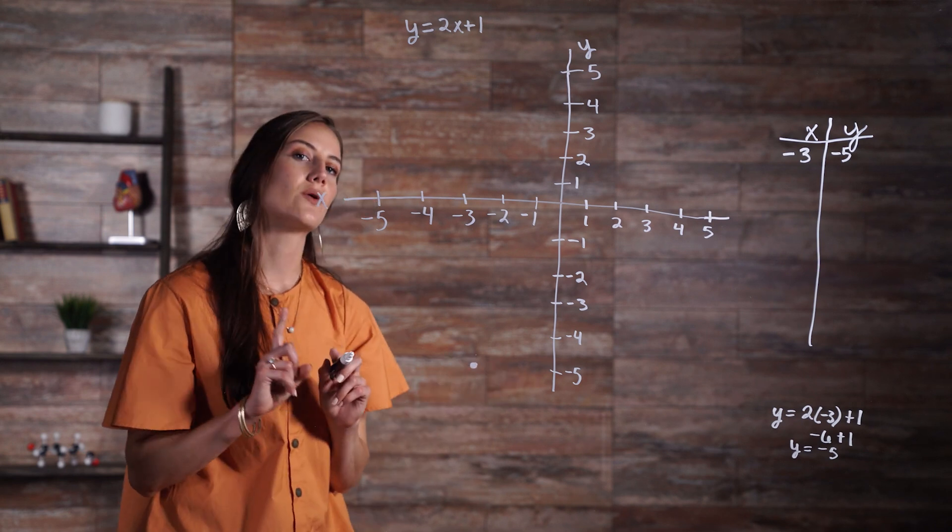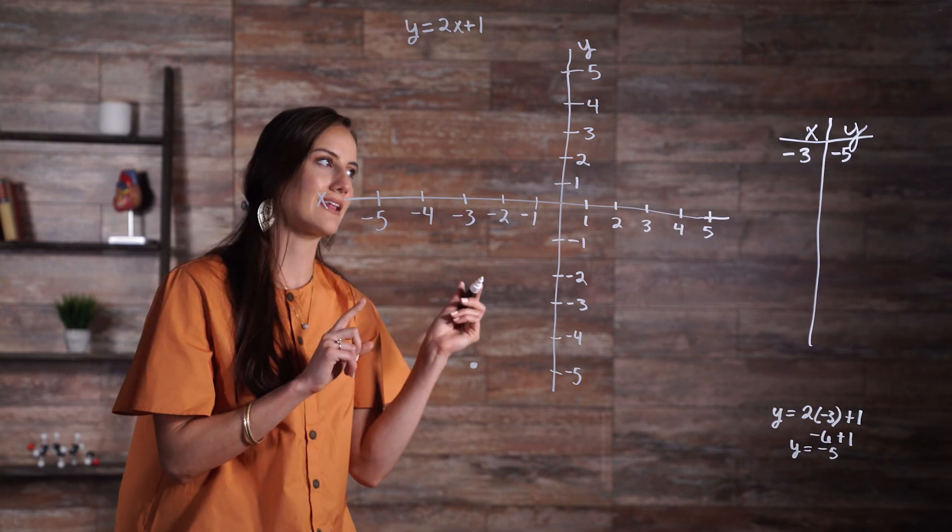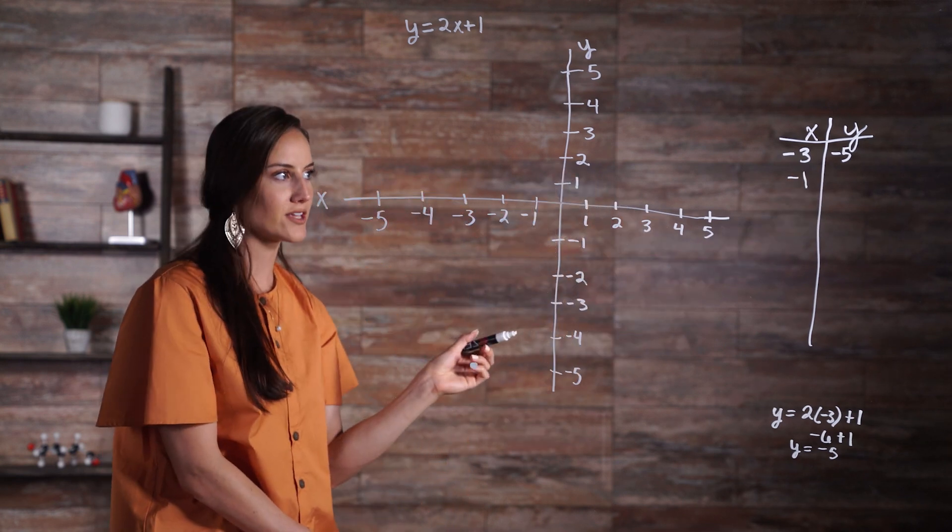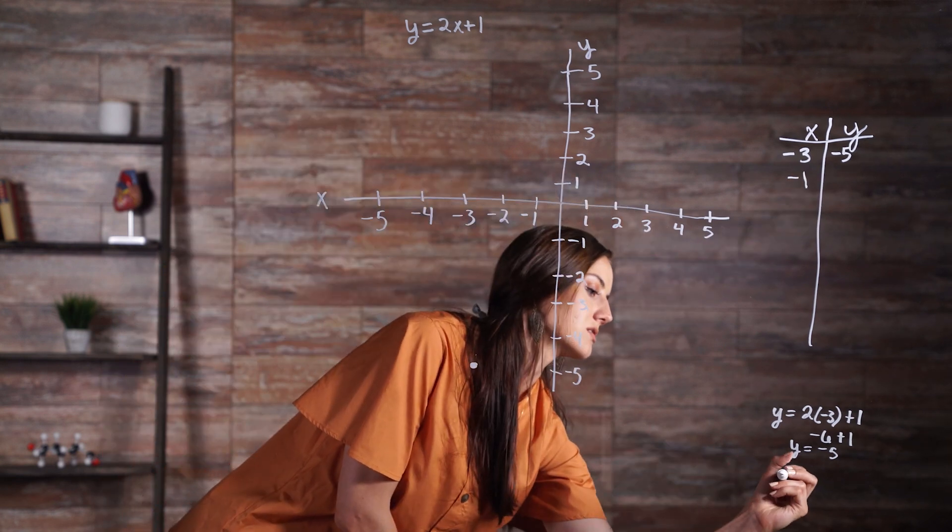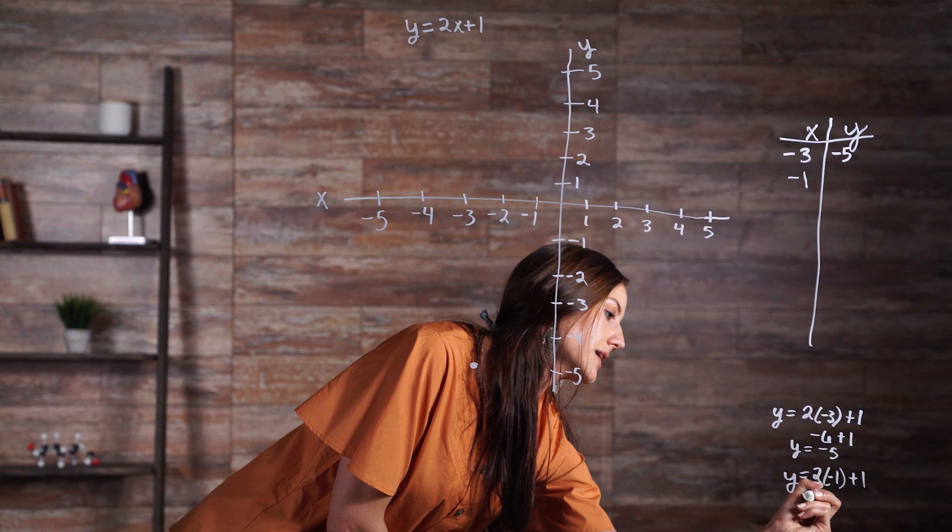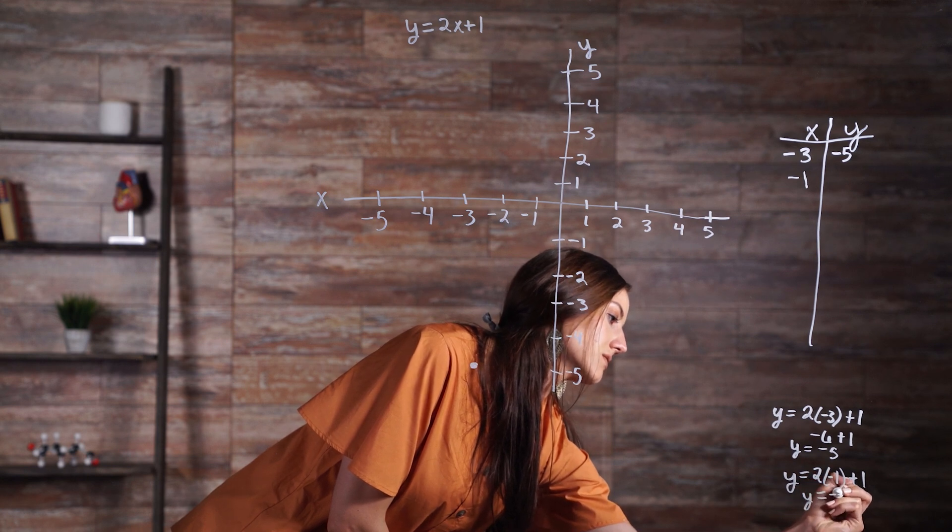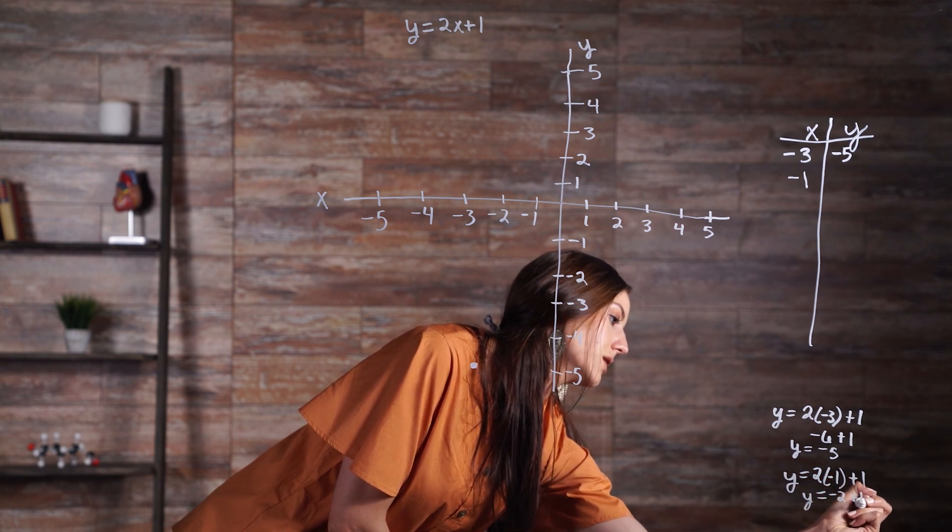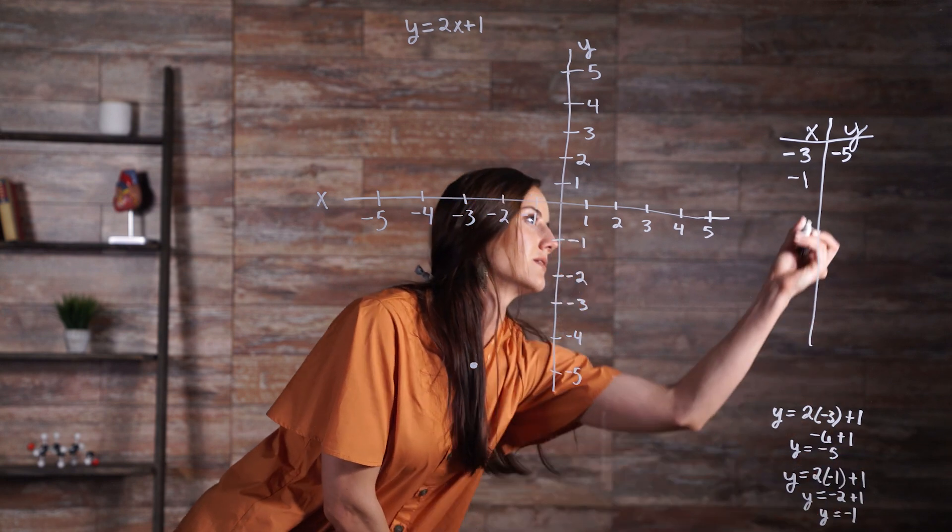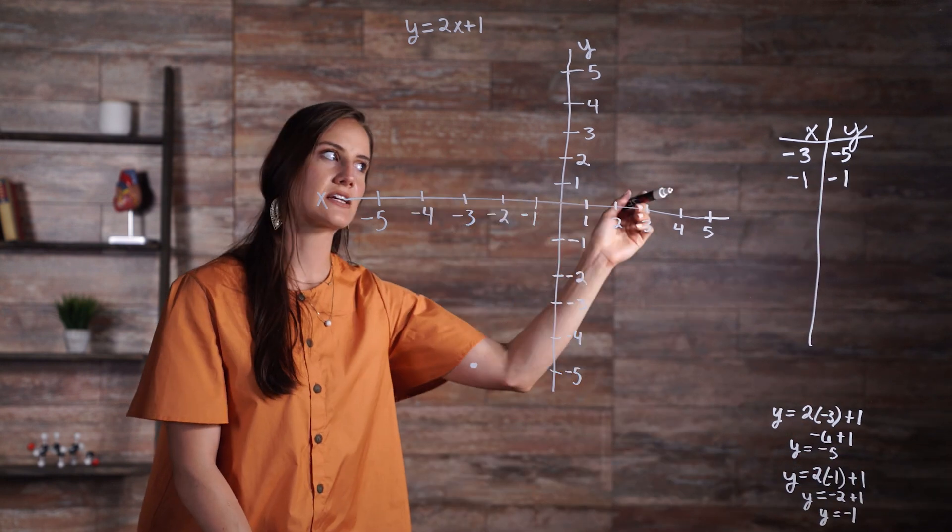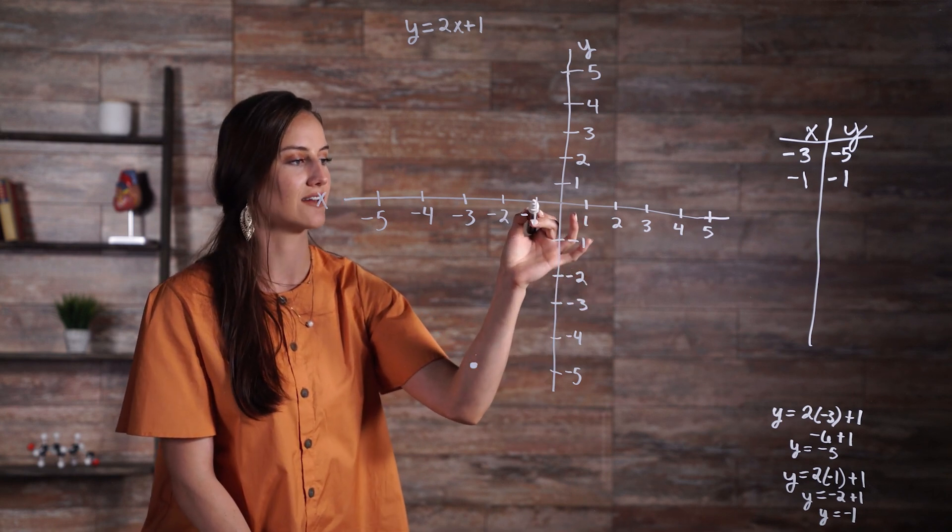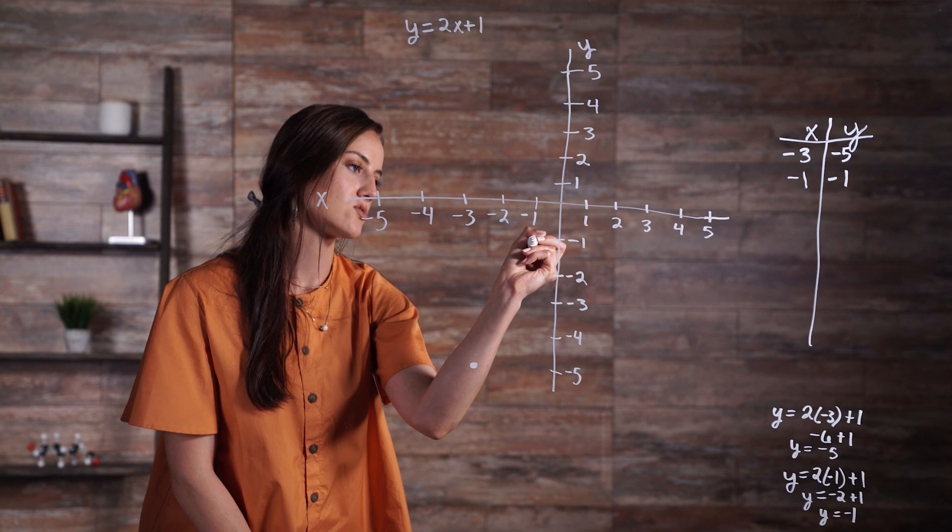Now let's try an x value of negative 1. Once again, we write negative 1 in the x column. So now we need to find our corresponding y value by plugging it into our equation. So we get 2 times negative 1 plus 1. So y is equal to negative 2 plus 1, which gives us y is equal to negative 1. So now I have our next coordinate as negative 1, negative 1. So first we go to our x-axis, find negative 1, and go down to negative 1, and draw our mark.